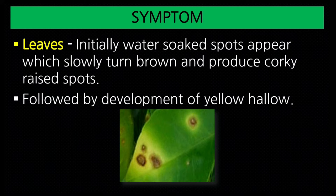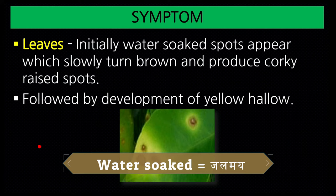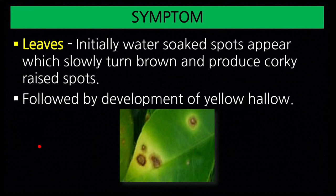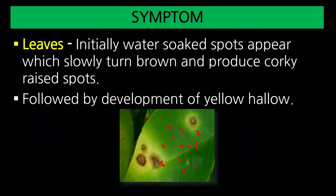Looking at the leaf symptoms: initially, water-soaked spots appear, which slowly turn brown and produce corky raised spots, followed by development of a yellow halo. First, water-soaked spots (jal bheeje dhabbe) appear, then they turn brown, the surface becomes raised and starts cracking, and a yellow halo surrounds the spots. When infection is very high on a leaf, defoliation occurs — the leaves fall off.